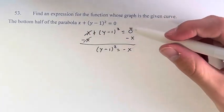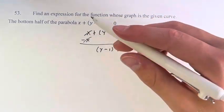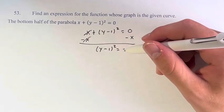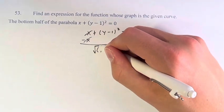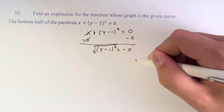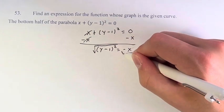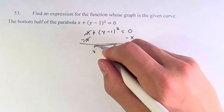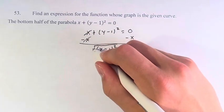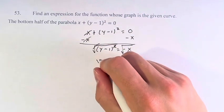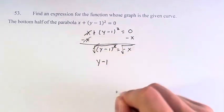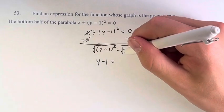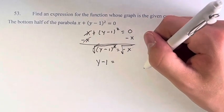Now we're going to take the square root of this function. The square root of y minus 1 squared is just y minus 1, so we get y minus 1 is equal to the square root of negative x.